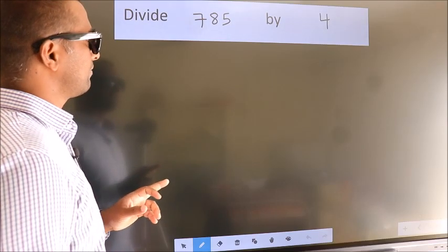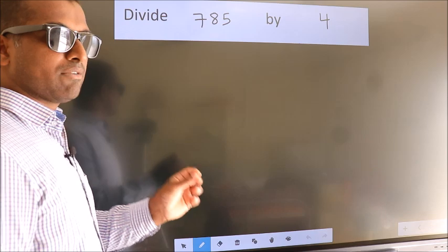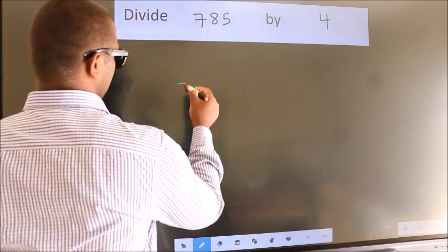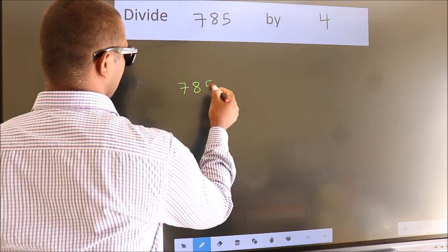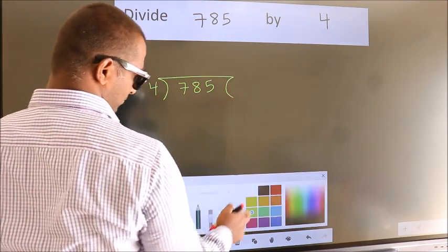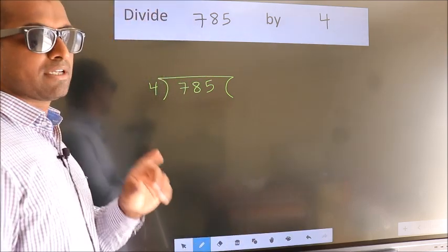Divide 785 by 4. To do this division, we should frame it in this way. 785 here, 4 here. This is your step 1.